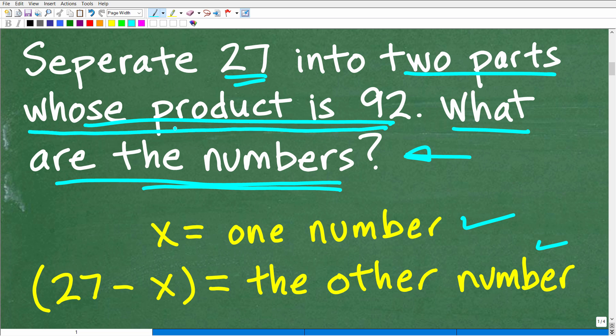So let's take a look at some more details in the problem says separate 27 into two parts whose product, these two parts, whose product product means what multiplication. So that if we multiply these two together is 92. So the product is 92.